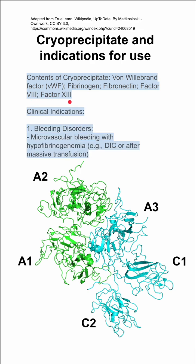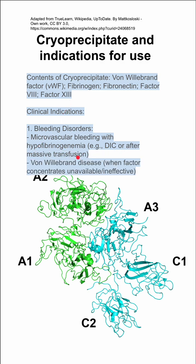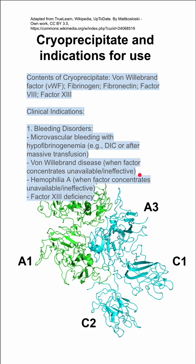The clinical indications include bleeding disorders like microvascular bleeding with hypofibrinogenemia, such as DIC or after a massive transfusion protocol. Also in von Willebrand's disease when factor concentrates are unavailable or ineffective, and in hemophilia A and factor XIII deficiency. It's also used in congenital dysfibrinogenemias.